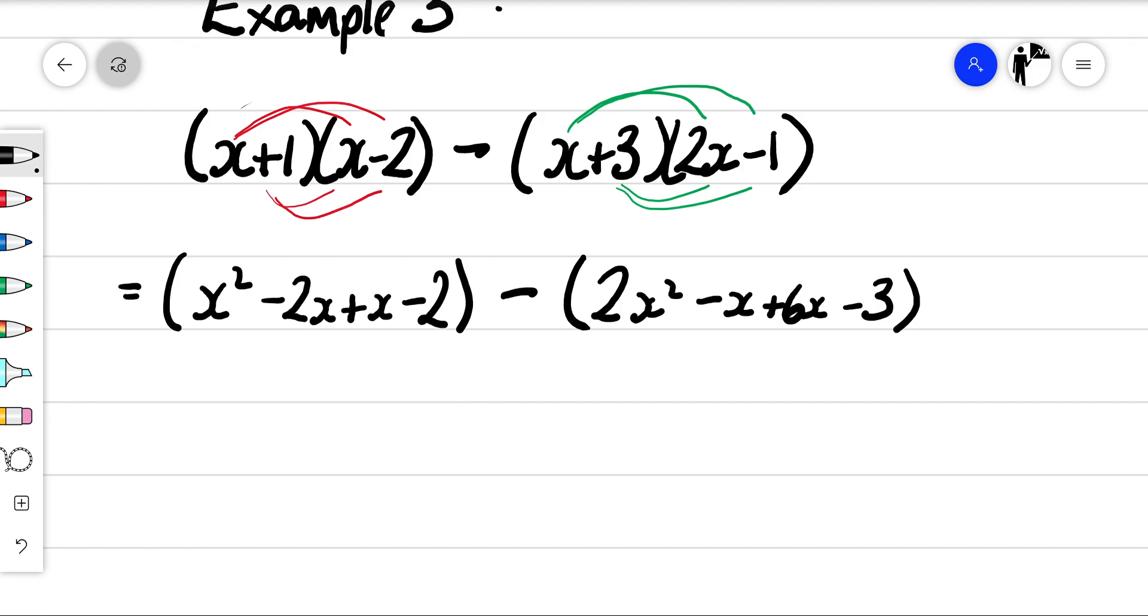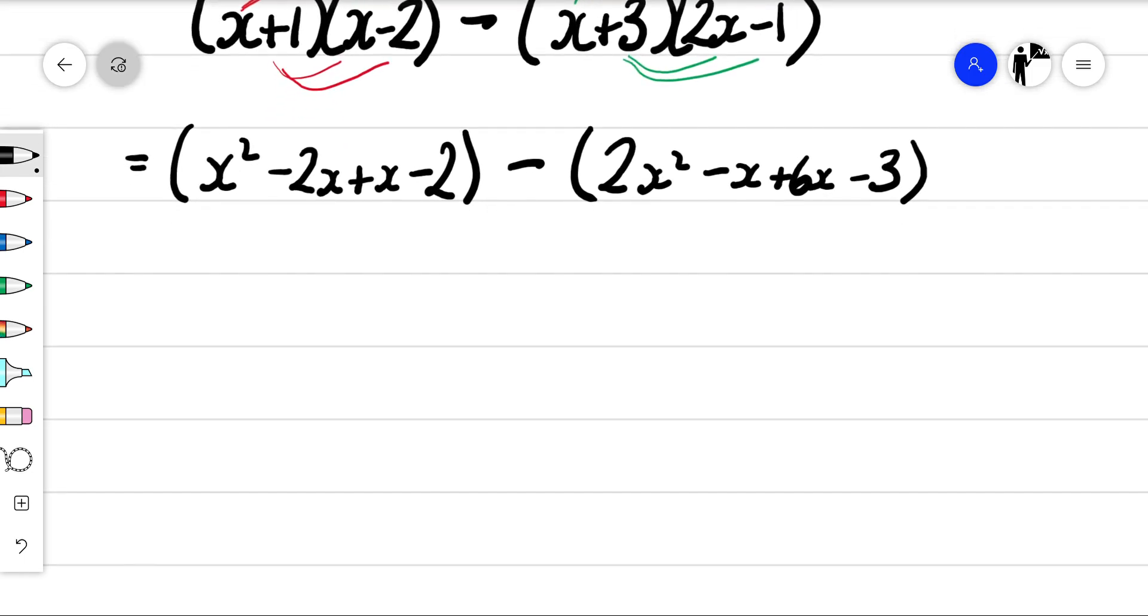Our next step would be just to simplify both brackets individually. So this would become x squared minus x minus 2 because I've got that minus 2x plus x. And we're subtracting 2x squared plus 5x minus 3.